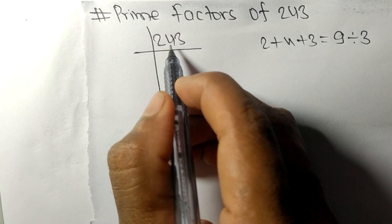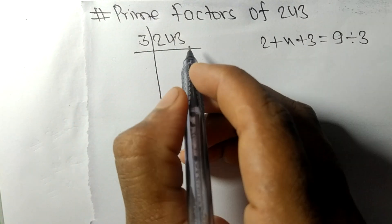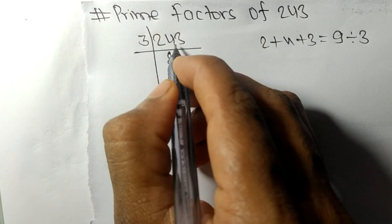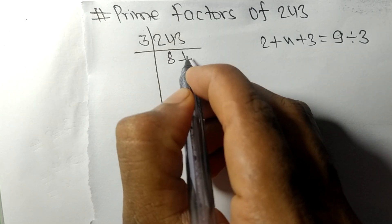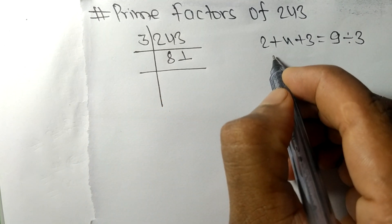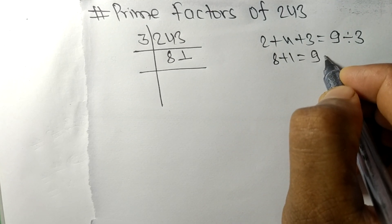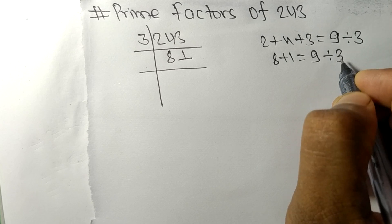So 243 is also divisible by 3. 3 times 8 is 24 and 3 times 1 is 3. Now we got 81. When we add 8 plus 1 we get 9, and 9 is exactly divisible by 3.